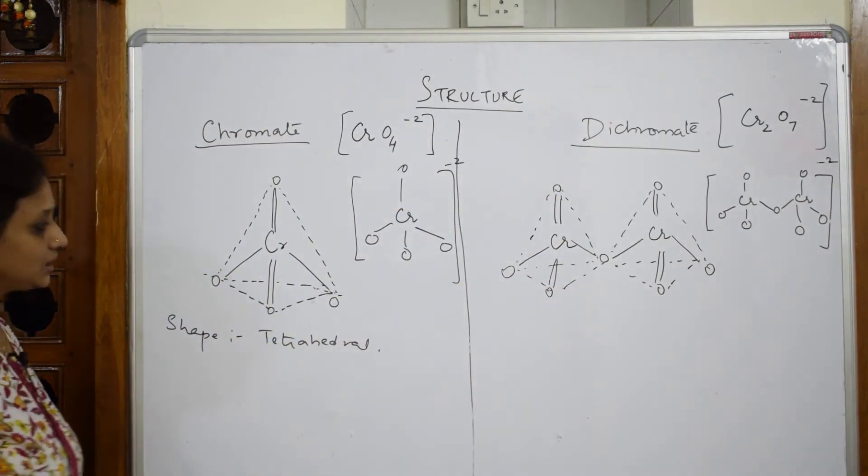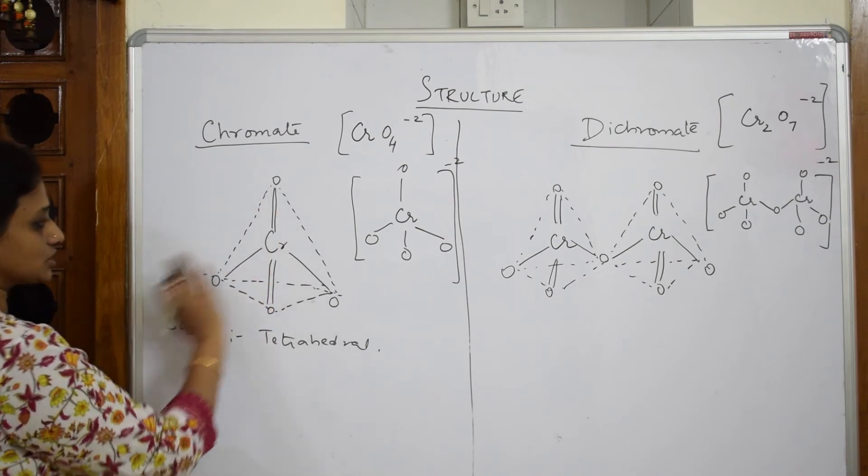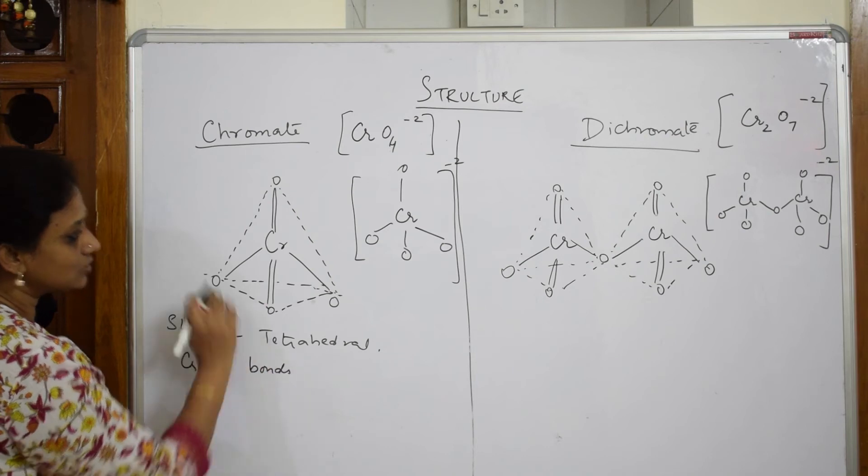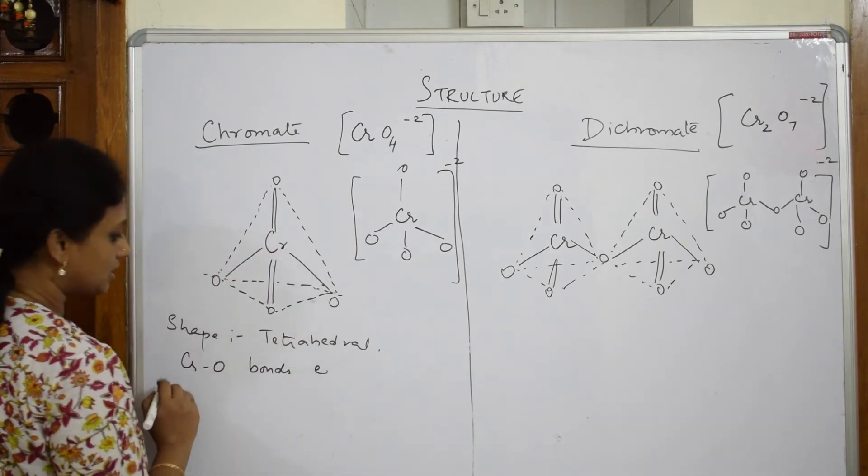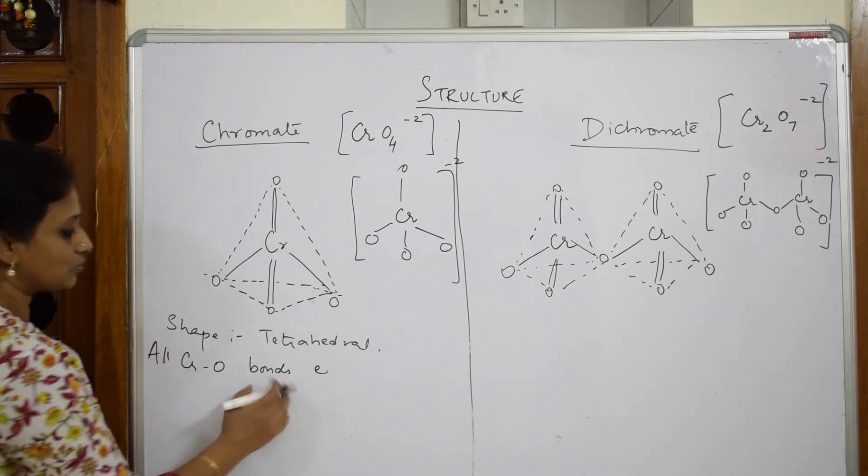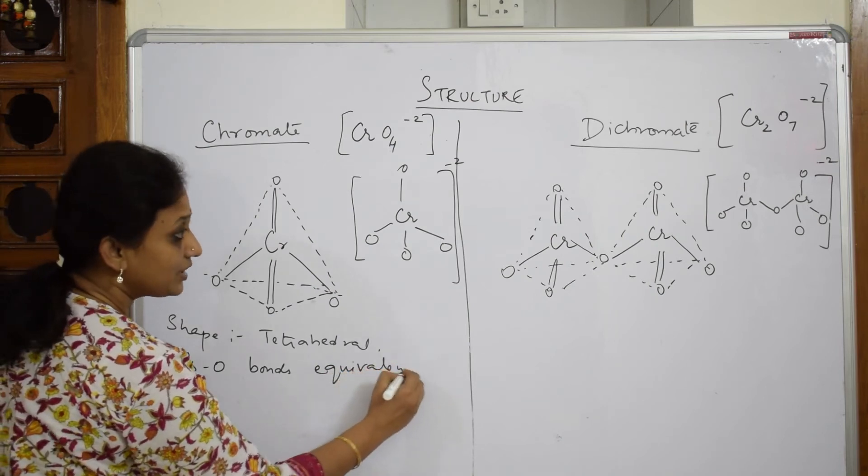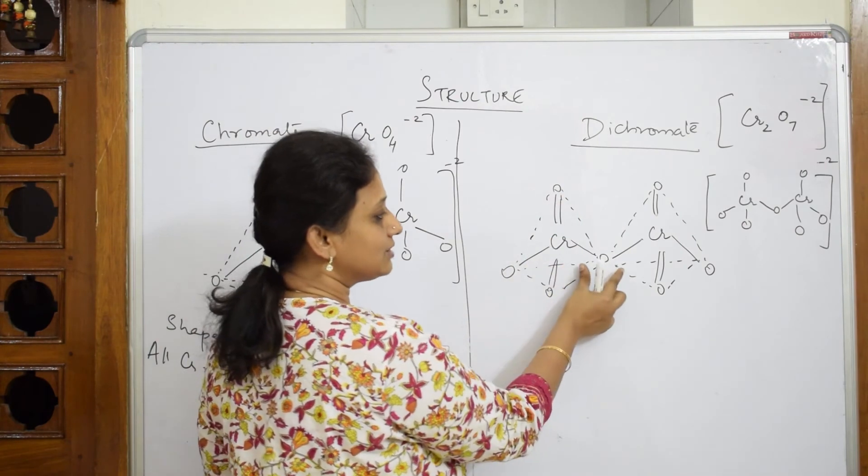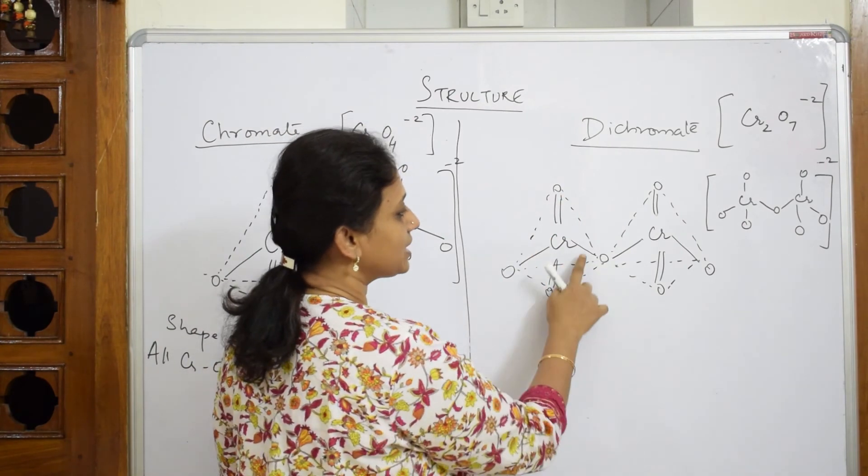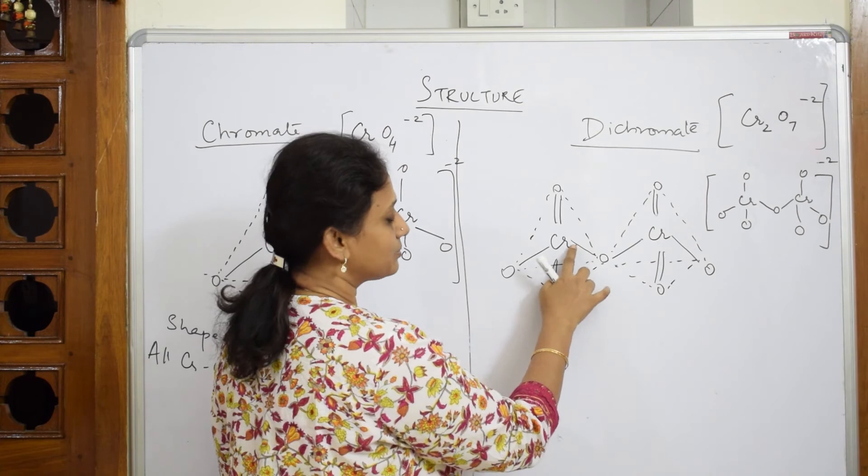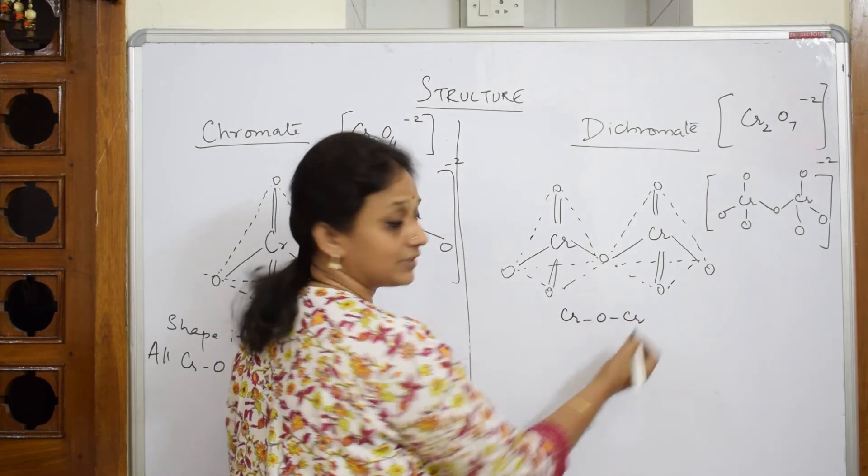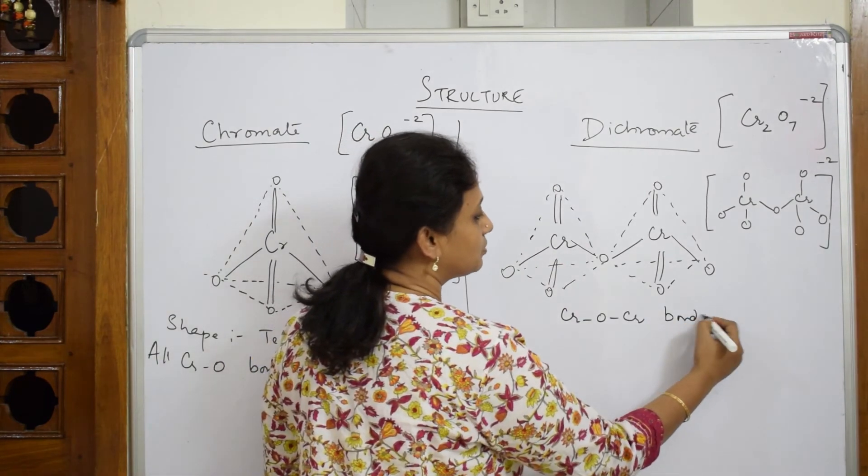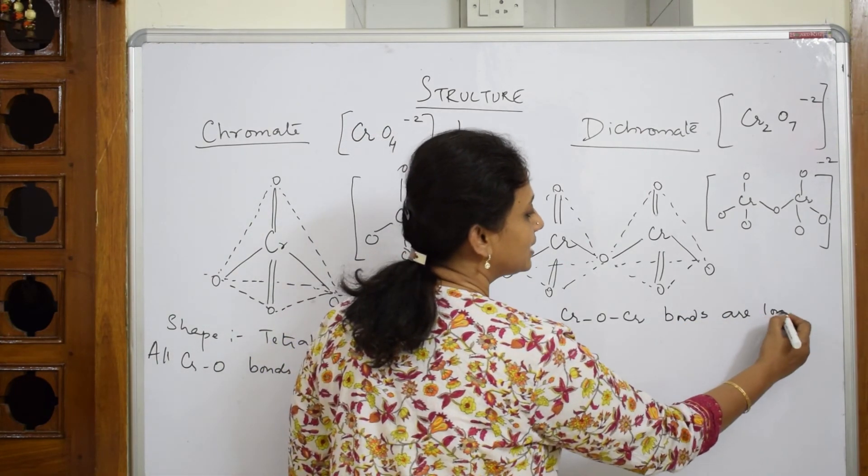So most important. Here chromium and oxygen bonds. When I have to see, all chromium and oxygen bonds are equivalent. All are equal. So all Cr-O bonds are equivalent, means equal. But when I have to see dichromate structure, this is equal, this is equal, this is equal. But this particular bond, this bond from the Cr-O-Cr bond, when I have to see the bond length, observe, the bond length here or the bonds are longer. Why are they longer?